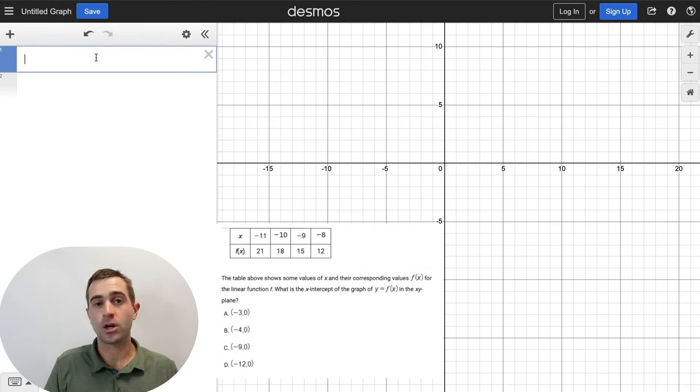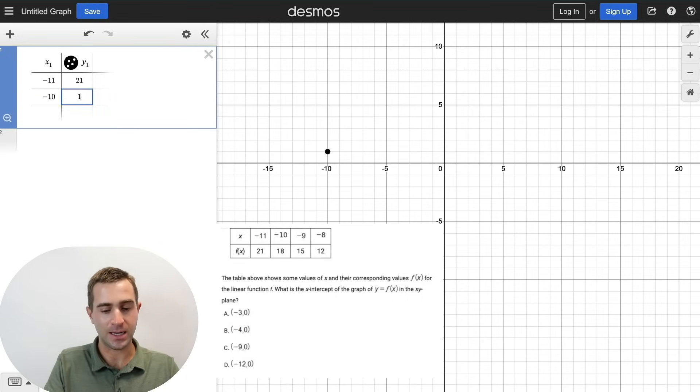The next thing you're going to see on your test are lines questions, and this is actually one of the best Desmos hacks we can use to make your life a lot easier. All we're simply going to do is we're going to type in table, then we're going to enter in two points on that line. We're going to use the points negative 11 and 21, and we're going to use the point negative 10 and 18.